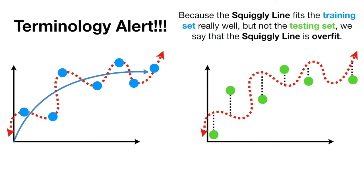Oh no! Terminology alert! Because the squiggly line fits the training set really well, but not the testing set, we say that the squiggly line is overfit.